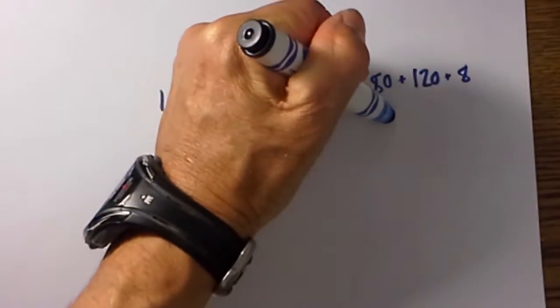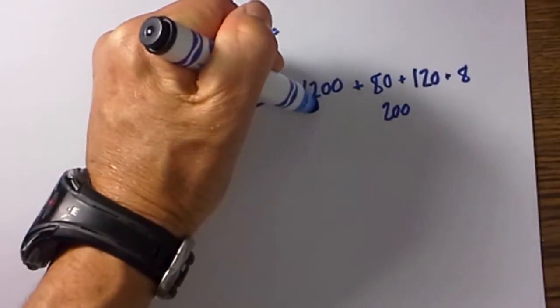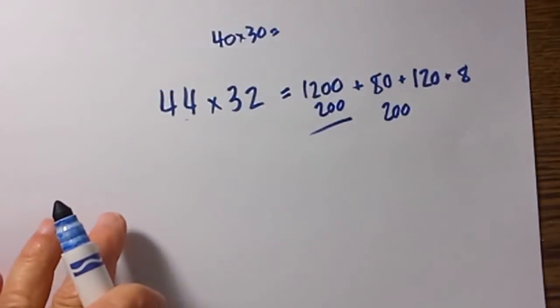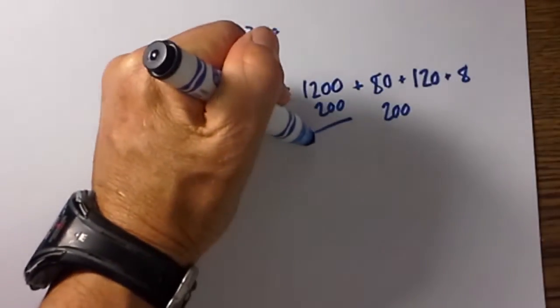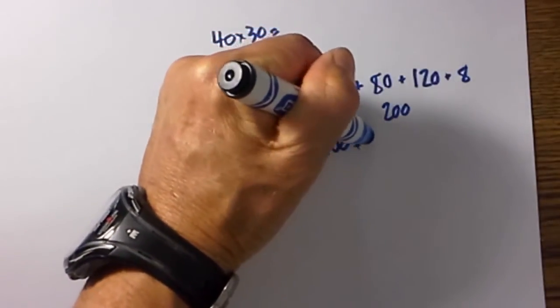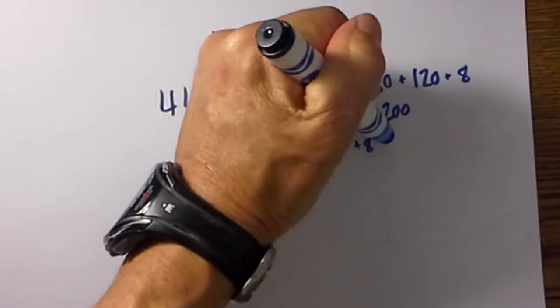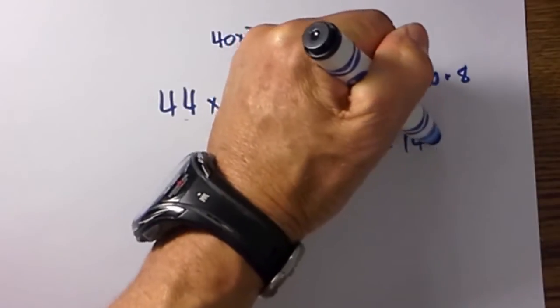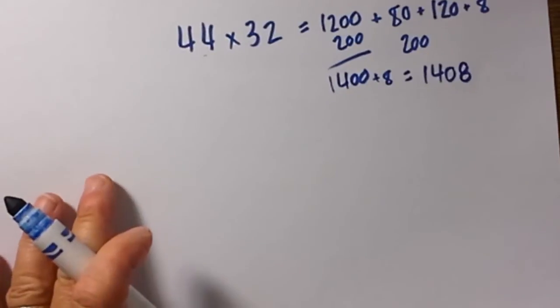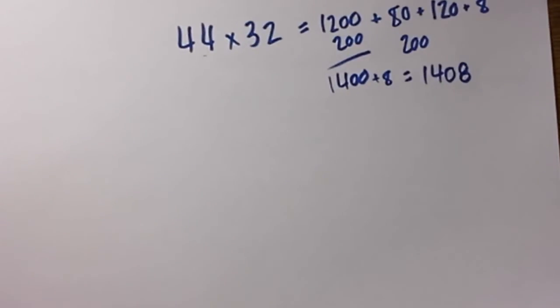We then add these up. 80 plus 120 is 200. 200 plus 1200. As you can see with all the zeros it makes the addition pretty easy. That is 1400 plus 8. So the answer is 1408. Again it is taking advantage of the hundreds and then it makes some numbers easy to add together.